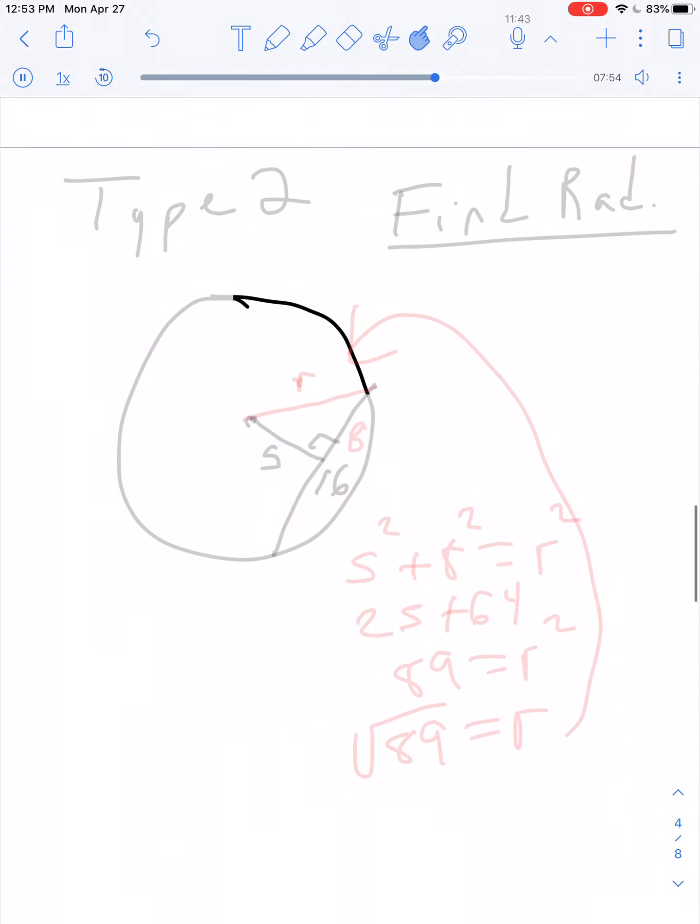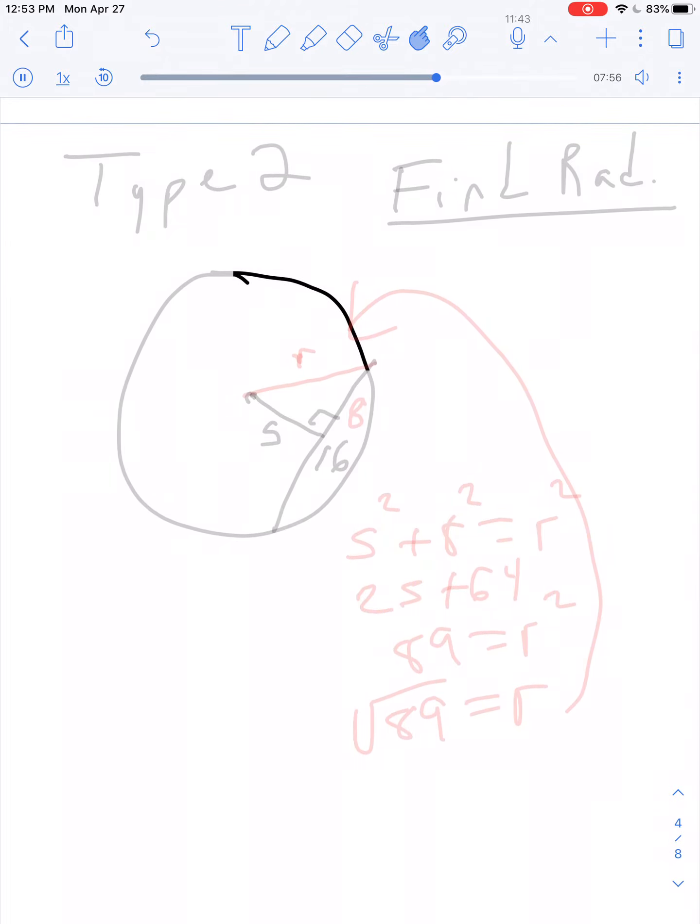Type 2. On a type 2 circle, we have to find the radius. Here's what we're given. So we have a chord down here that's 16. And we know that its distance from the center is 5. We want to know what the radius is. Call it R, radius.